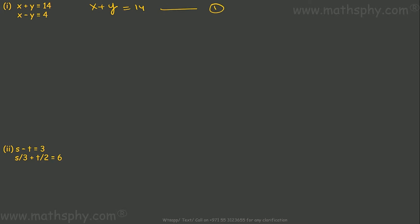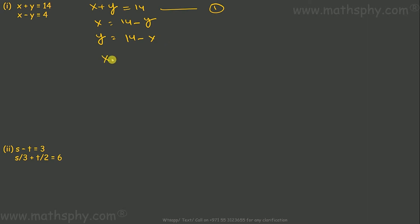this can be written as X equals 14 minus Y. The same equation I can write for Y: Y equals 14 minus X. So from the first equation I have a value for X and a value for Y. Now my equation number two is X minus Y equals 4 — that's my second equation.